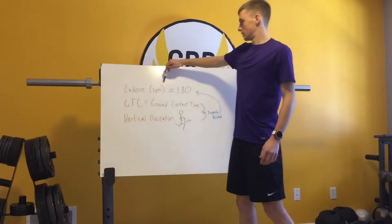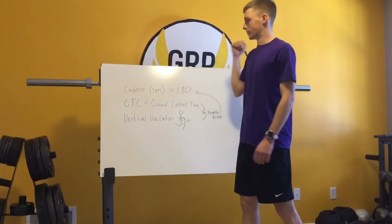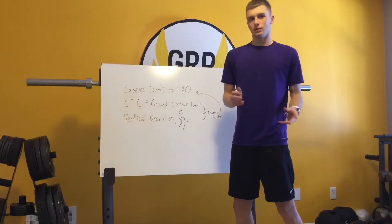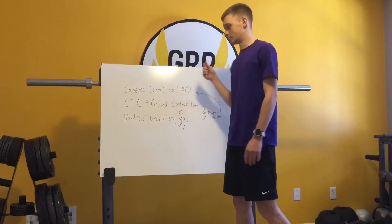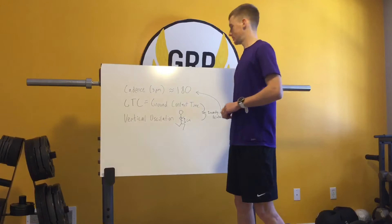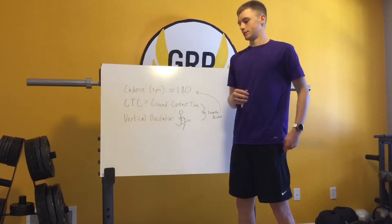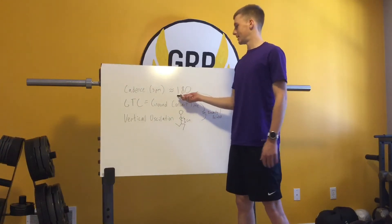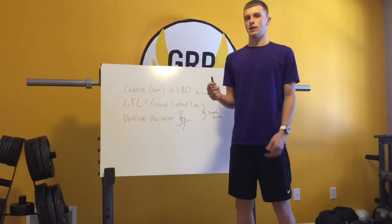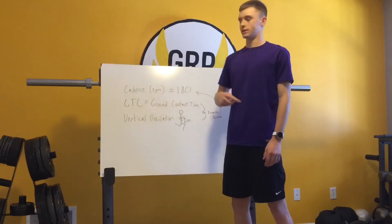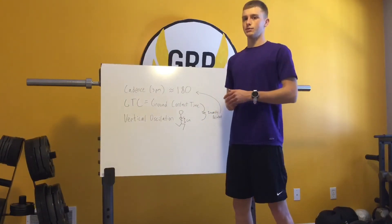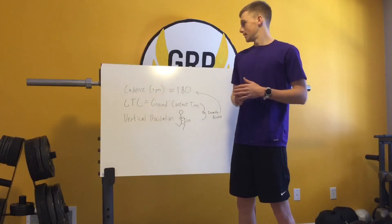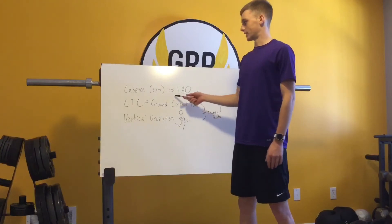Now for actual dynamics: first, cadence. This is a really important one that runners have known about for a long time. Cadence is simply the number of steps you take per minute. Generally the rule is that 180 is the ideal number, but this depends on who you are — your height, fitness, and other factors. Also, at faster speeds your cadence is probably going to be higher, and at slower speeds it'll be lower, though some people don't change their cadence at all regardless of pace.